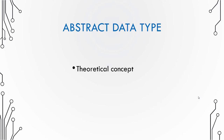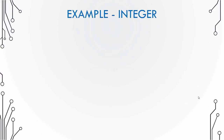Abstract data type is actually a theoretical concept, and if you want to implement an abstract data type you should use a data structure. So a data structure is basically an implementation of an abstract data type. Now let us look at an example: the abstract data type of integer. Abstract data type basically describes the properties and the operations of that type of data.